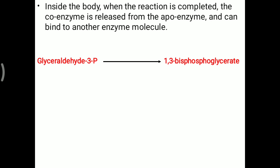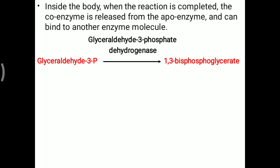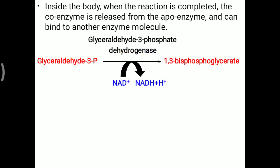To illustrate how this works: glyceraldehyde-3-phosphate is converted into 1,3-bisphosphoglycerate, one of the reactions of glycolysis. The enzyme needed is glyceraldehyde-3-phosphate dehydrogenase. In this reaction, the coenzyme NAD+ is converted into NADH. So the dehydrogenase acts as the enzyme, and NAD+ acts as the coenzyme, accepting hydrogen and being converted to NADH.